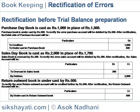Purchase day book is cast as Rs.1000 in place of Rs.1500. The purchase book is undercast by Rs.500. To rectify the error, the purchase account should be debited by Rs.500. After rectification, the debit side of the purchase account will be as shown below.